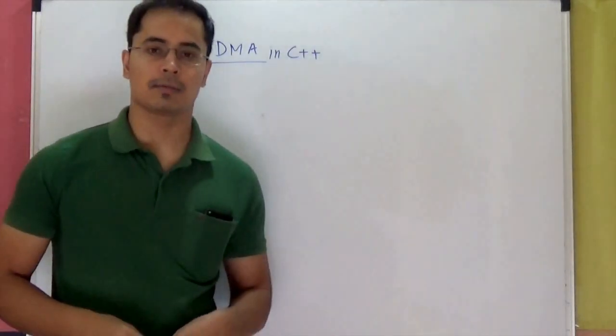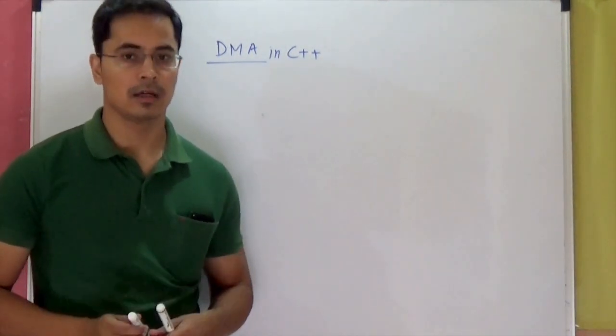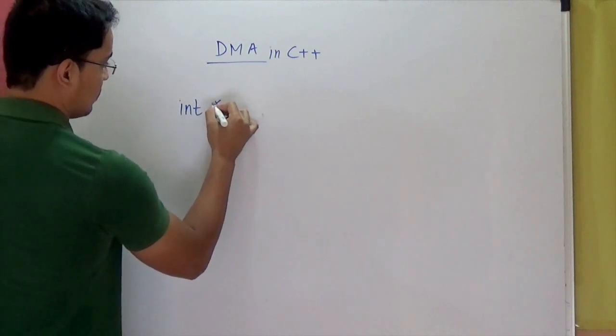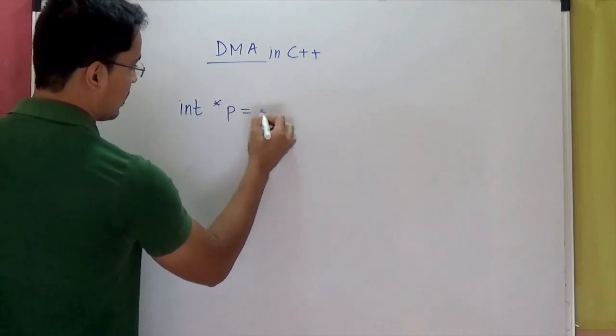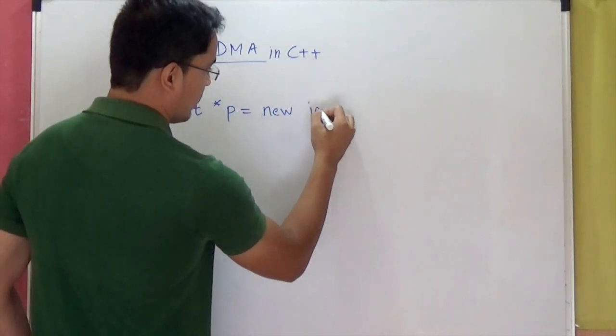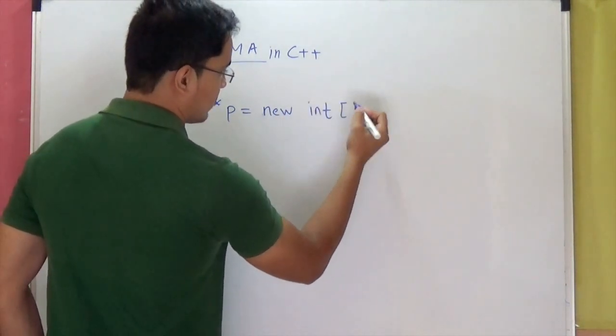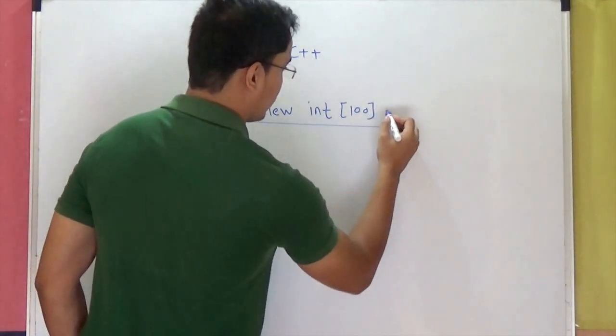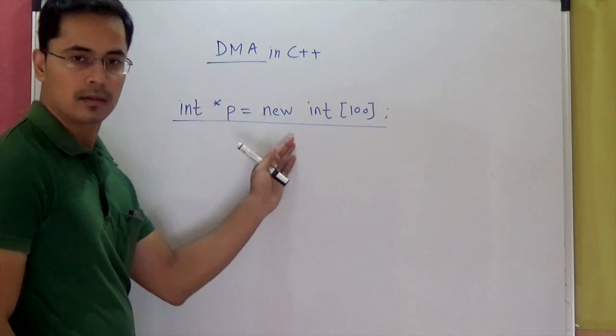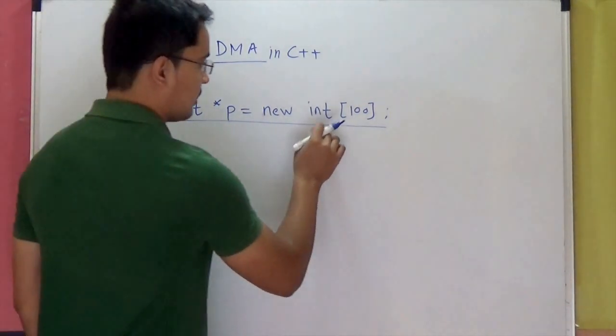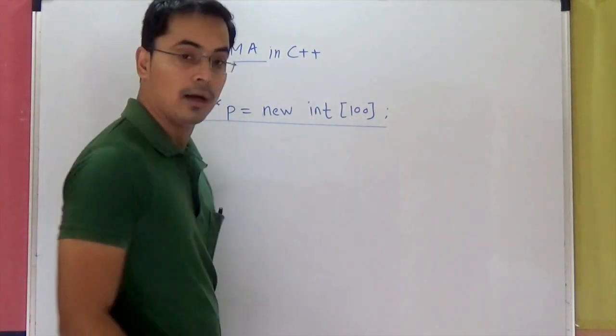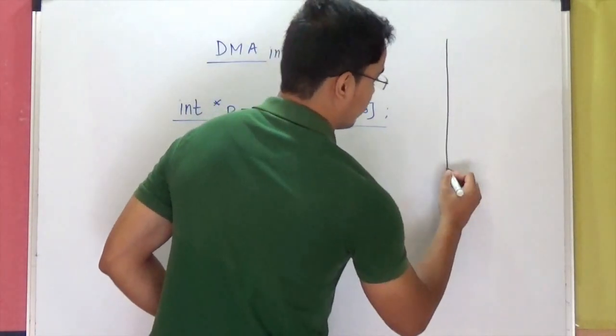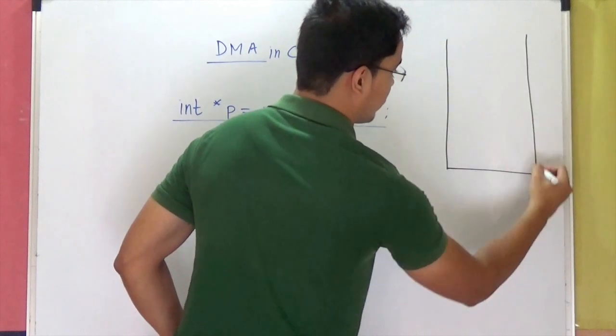All of these are used to dynamically allocate memory from heap. In C++ they have made it significantly easier to allocate memory dynamically. Integer pointer p equal to new int and let's say 100. If you remember this well.